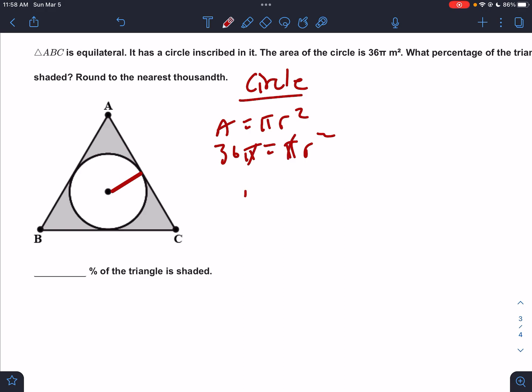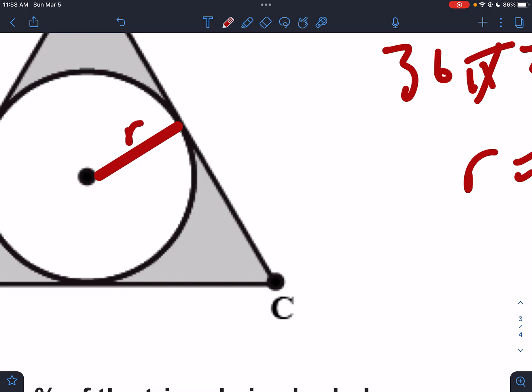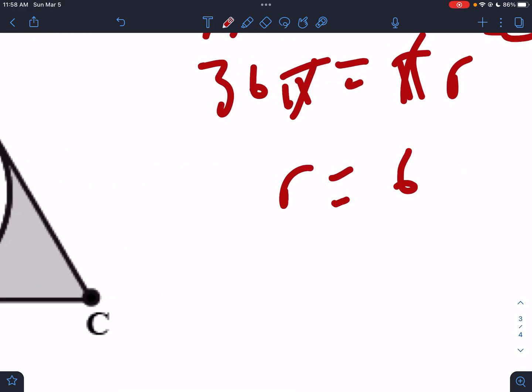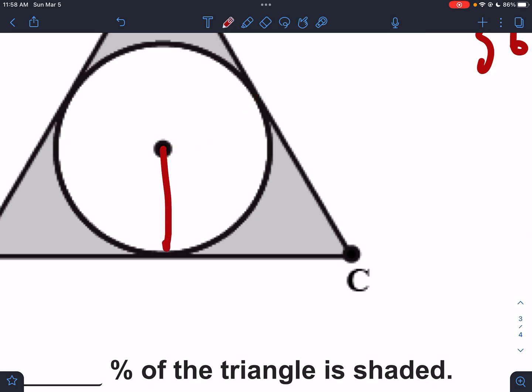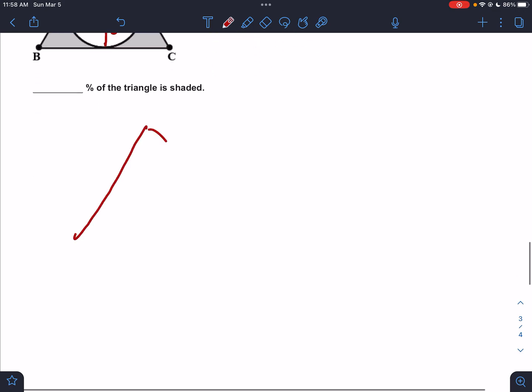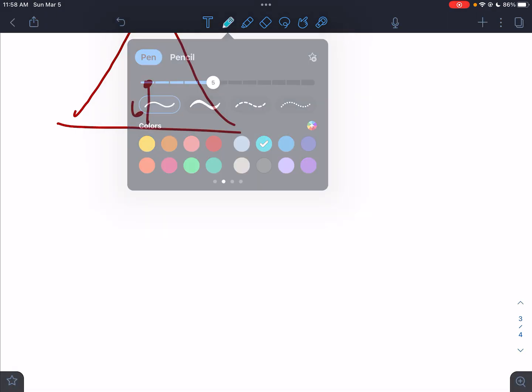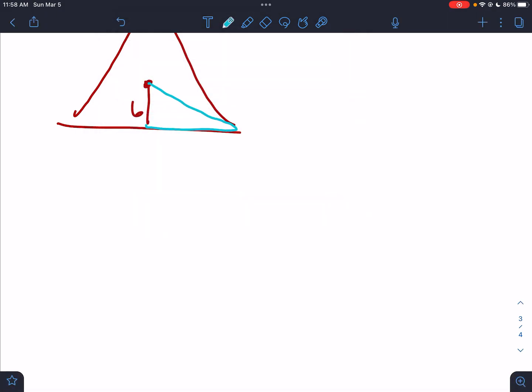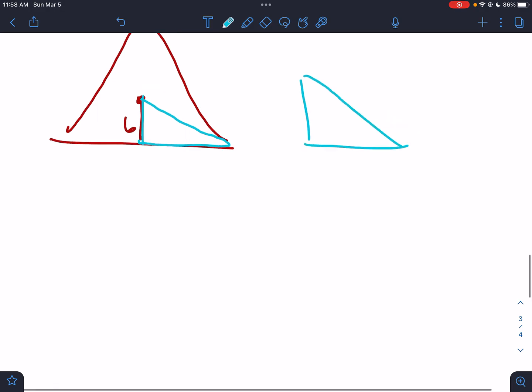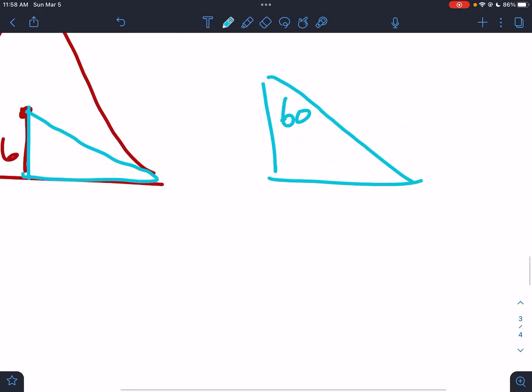So they're saying 36π equals πr². The π's cancel out, r must be 6. So the radius of the circle is 6. Why is that important? Well, look at this: the radius of the circle would be the apothem of the triangle. Might help if I draw it this way so you can see it a little bit better, but we know that that's 6. So what I'm going to do is focus on the triangle with an apothem of 6.